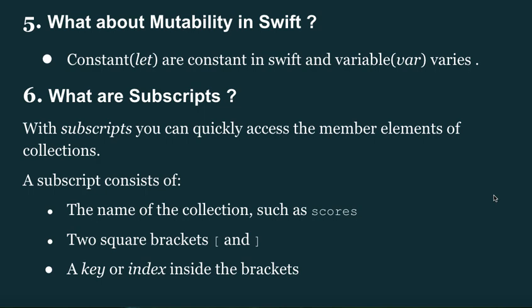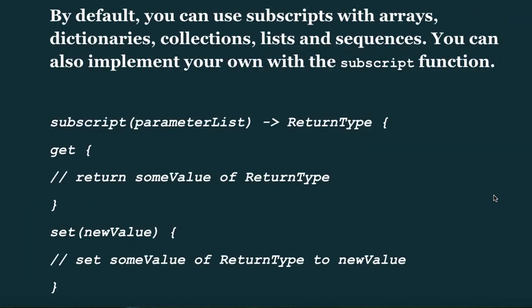What are subscripts? With subscripts, you can quickly access member elements of a collection. A subscript consists of the name of the collection, such as `scores`, followed by a key or index inside square brackets. By default, you can use subscripts with arrays, dictionaries, collections, lists, and sequences. You can also implement your own using the `subscript` function with a parameter, return type, and get/set accessors.